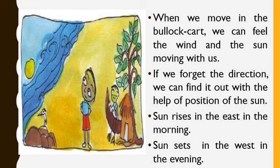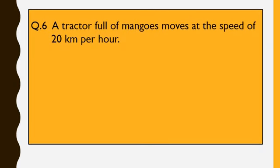When we move in the bullock cart or in a tractor or in any other vehicle, we can feel that the wind and the sun also move with us during our journey. If we forget the direction, we can find it with the help of the position of the sun. You know that the sun rises in the east in the morning — so that is the east direction — and the sun sets in the west in the evening. Now again, over to the sums.